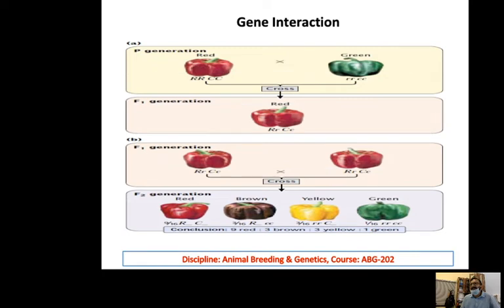In this example there are red and green fruits. Red are completely dominant for two genes and green are completely recessive for two genes. In F1, we expect heterozygosity and since red is dominant, the phenotype is red. When this F1 is intercrossed, we get four different types of phenotypes.